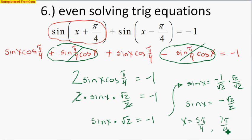Obviously there could be infinite answers if we keep going around the circle, as we discussed in our solving trig equations unit. But if we only wanted answers on the unit circle from 0 to 2pi, those two values are the answers. All I did was utilize angles I knew.